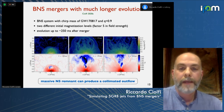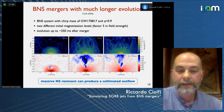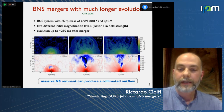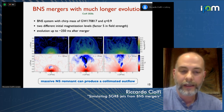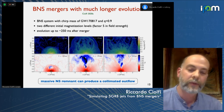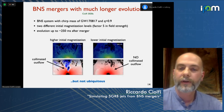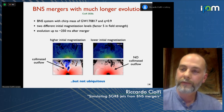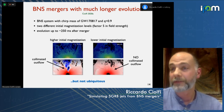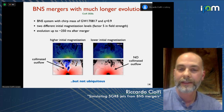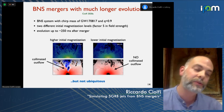This simulation shows that a massive neutron star remnant can produce a collimated outflow in a natural way — the first time this has been demonstrated in a full magnetized binary star merger simulation. Interestingly, the other simulation with the lower initial field, even after 200 milliseconds, shows no sign of anything like this, telling us that this outcome is not ubiquitous — the production of a collimated outflow is not guaranteed.